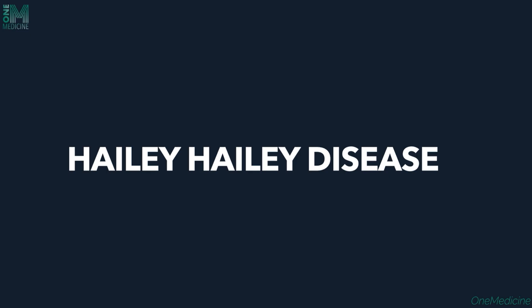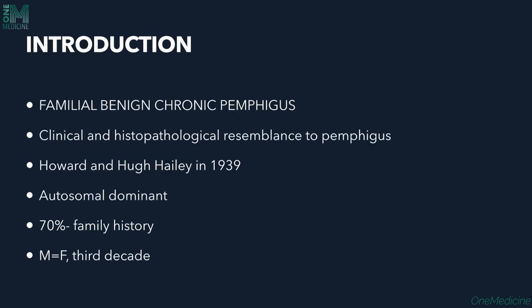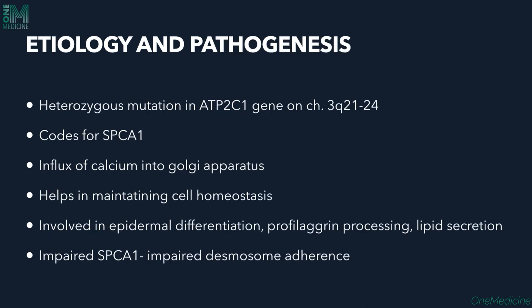Welcome to One Medicine. Today I'll discuss Hailey-Hailey disease, also called familial benign chronic pemphigus. It is named so because of the clinical and histopathological resemblance to the pemphigus group of disorders. It was named after Howard and Hugh Hailey, who described this condition in 1939. It is an autosomal dominant condition; in 70% of patients there is a family history. Both females and males are equally affected, and the disease starts in the third decade of life.